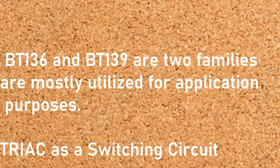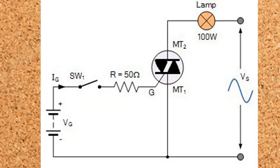TRIAC as a switching circuit. This circuit works as follows: if switch one is open, the device acts as an open switch and the light passes through zero current. With the help of the current limiting resistor R, the device is in an on state when switch one is closed. The self-latching occurs immediately after the start of each half cycle, resulting in full switching power to the light load. This circuit's input supply is sinusoidal alternating current, and the TRIAC automatically unlatches at the conclusion of each half cycle.